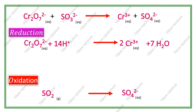Now we have to balance the charges. On the reactant side, dichromate gives 2 negative charges and 14 H⁺ gives plus 14, giving a net charge of 12 plus. On the product side, 2 × 3 plus gives 6 positive charges, and water molecules have no charge. To balance these charges, we add 6 electrons on the reactant side.